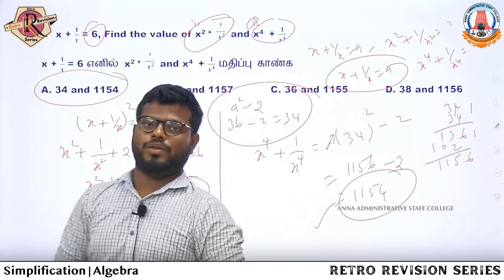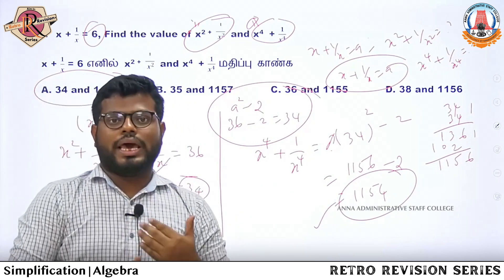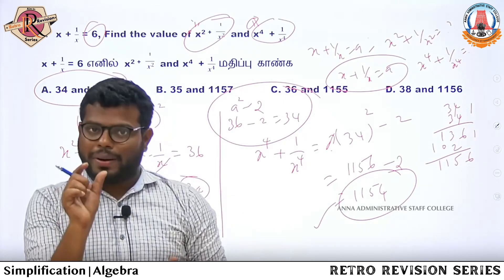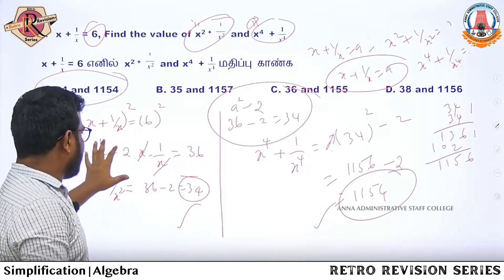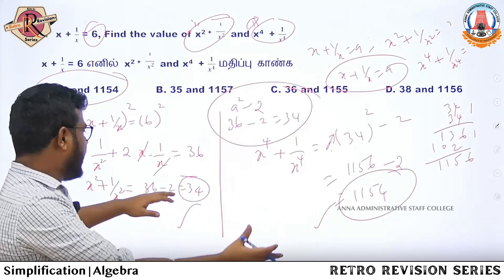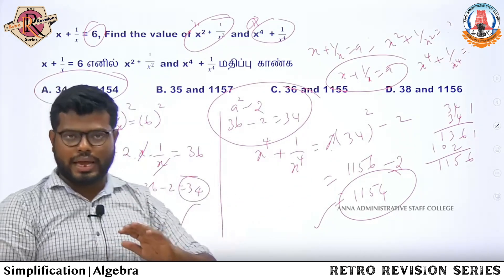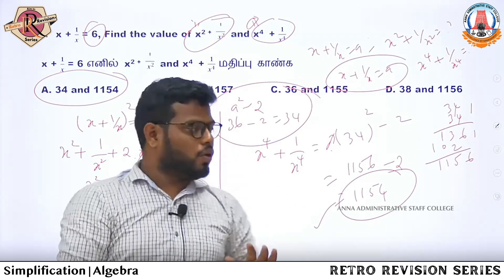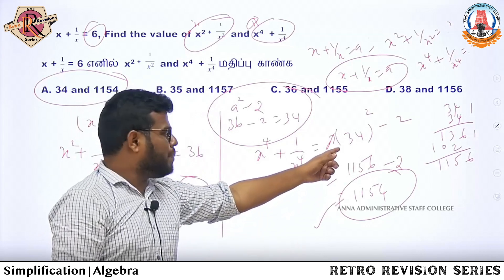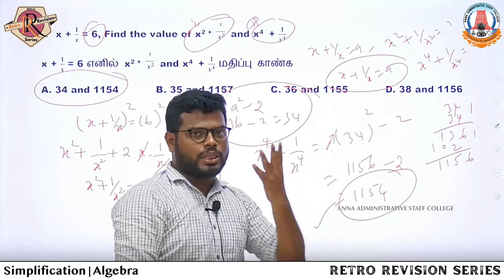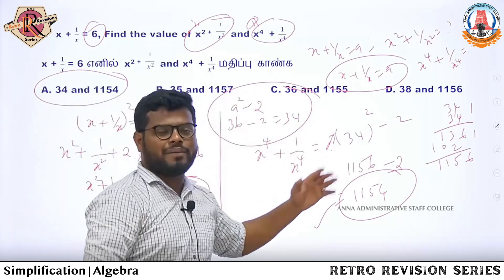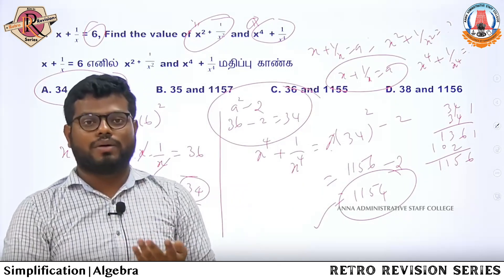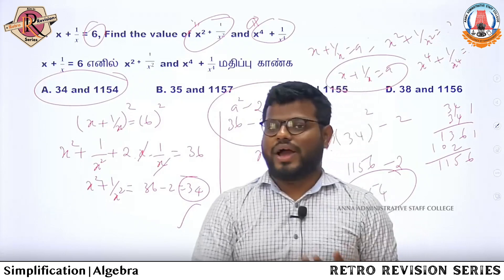Answer is option A. To summarize: x plus 1 by x gives x squared plus 1 by x squared by squaring and subtracting 2. You can repeat this to get x power 4, x power 8, x power 16 by applying the same process. Question number 7 answer is option A.